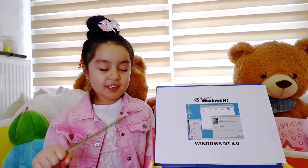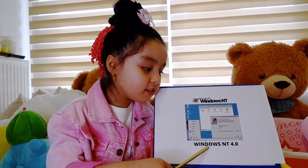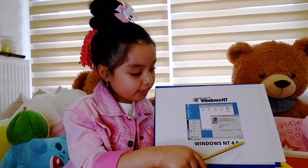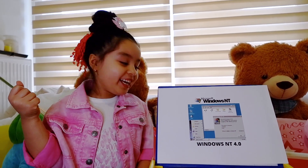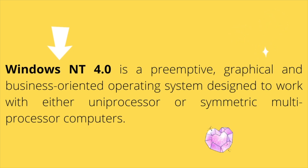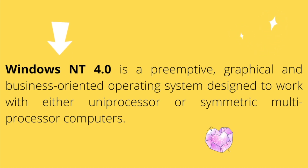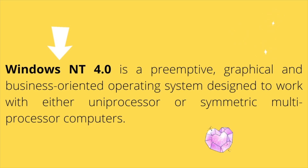The next version of Windows is Windows NT 4.0. It is a preemptive, graphical, and multitasking operating system designed to work with both uniprocessor and multi-processor computers.